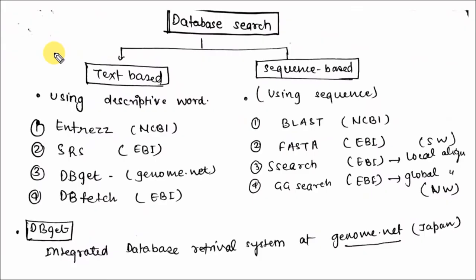Database search tools can be divided into two parts on the basis of search principle: text-based search tools or sequence-based search tools.